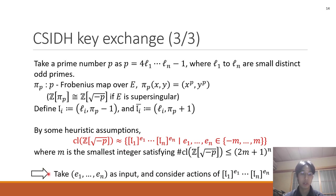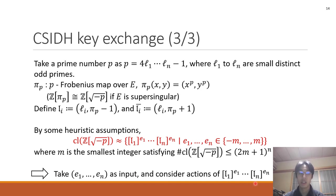So we take e_1 to e_n as input and consider actions of these ideal classes. Then we can compute group actions efficiently. This is the CSIDH key exchange.